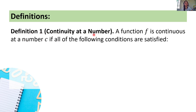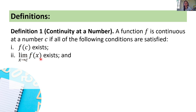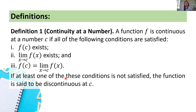Definition 1: Continuity at a number. A function f is continuous at a number c if all of the following conditions are satisfied: 1) f of c exists; 2) the limit of f of x as x approaches c exists; and 3) f of c is equal to the limit of f of x as x approaches c. If at least one of these conditions is not satisfied, the function is said to be discontinuous at c.